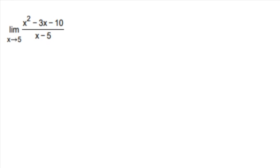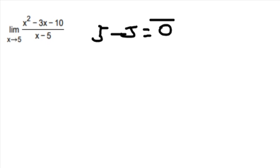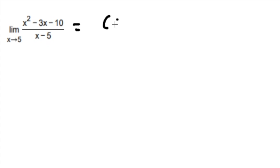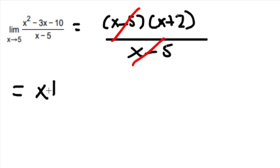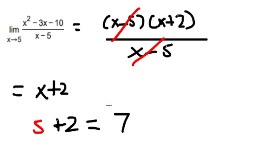For the next problem, we have the limit as x goes to 5. If we plug in x equals 5 on the bottom, we get 5 minus 5 equals 0, and anything over 0 is undefined. So we factor the top as (x minus 5)(x plus 2) over (x minus 5). The (x minus 5) terms cancel, leaving us with x plus 2. Plugging in x equals 5 gives us 5 plus 2, which is 7.